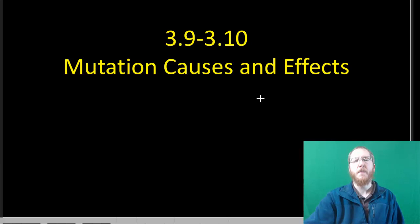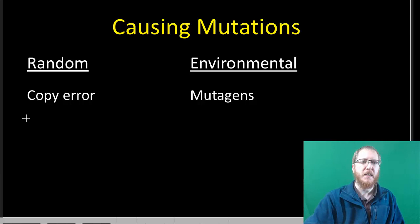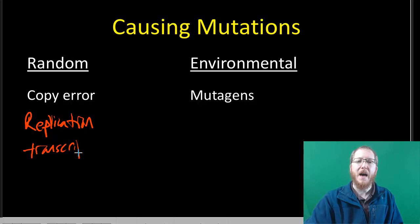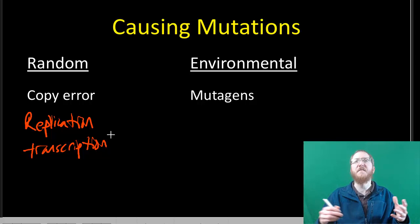Welcome to sections 3.9 and 3.10, where we're going to wrap up mutations by talking about how you get mutations and what they tend to do to you. Starting with the causes, there are two basic ways you can get a mutation. The first is random, when you're copying your DNA. This can happen through DNA replication, where you're copying DNA to another piece of DNA, and while doing that, you can make a mistake. This could also happen during transcription, though that's normally not as big a deal. Copying errors are unavoidable — not something you can really affect.